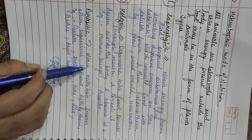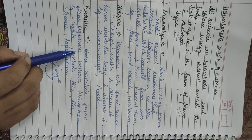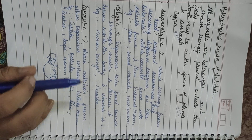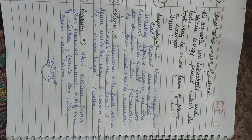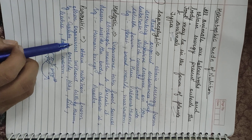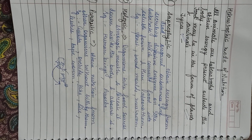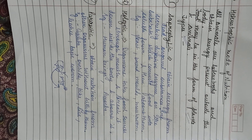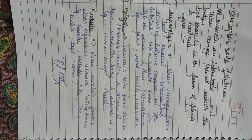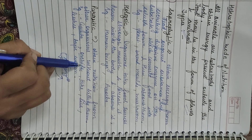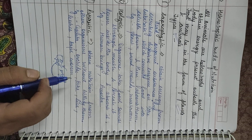Saprophytic organisms obtain food from dead organic substances. They release enzymes outside onto the food, the enzymes digest the food externally, and then the organism consumes the digested food. This type of digestion is also called extracellular digestion. It occurs in yeast, bread molds, and mushrooms — all types of fungi. These are also decomposers because they feed on dead organic matter. In parasitic nutrition, organisms obtain nutrition by attaching to another organism's body without killing it — either externally or internally. Some plants are also parasitic, like cuscuta and orchids. Parasitic animals include ticks, lice, leeches, and tapeworms.